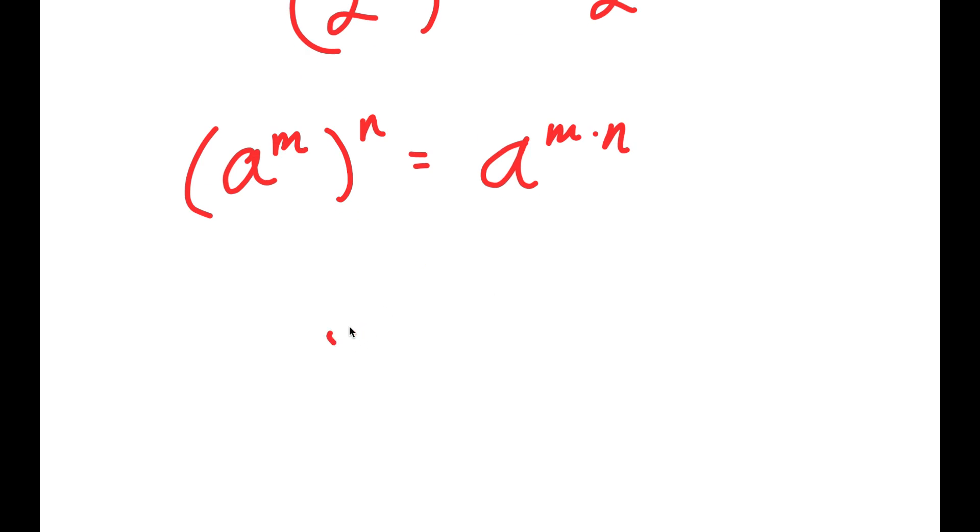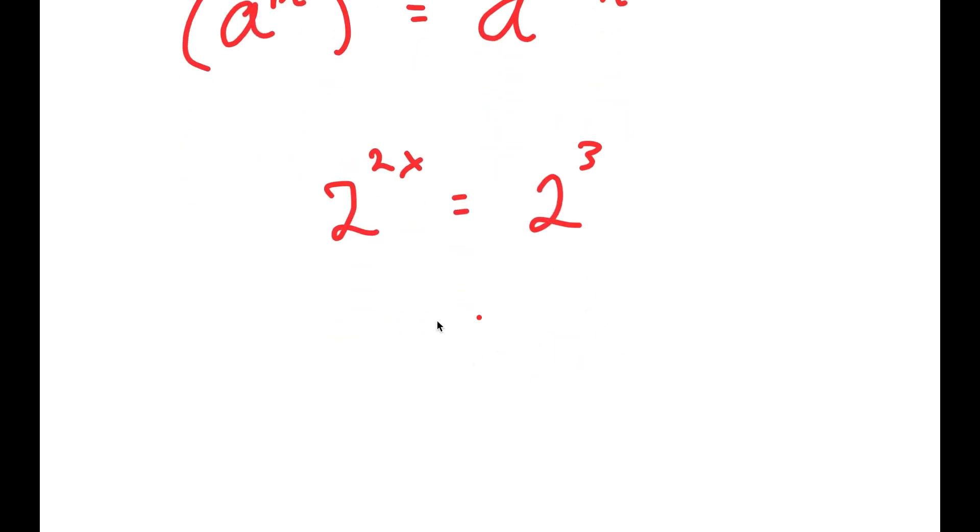So 2 to the power of 2 to the power of x is going to equal 2 to the power of 2x. So I get 2 to the power of 2x is equal to 2 to the power of 3.